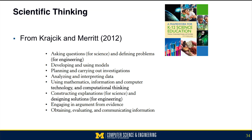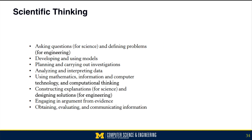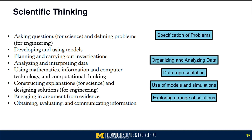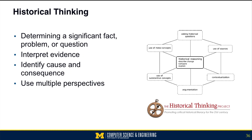Scientific thinking. The Next Generation Science Standards and the Framework for K-12 Science Education are very popular in the United States. Using a particular paper from Krajcik and Merrick from 2012 on what scientific thinking is, scientific thinking involves defining problems and developing and using models. We can go down this list and see that it again lines up pretty well with elements of computational thinking: specifying problems, organizing and analyzing data, representing data, using models and simulations, and exploring a range of solutions.